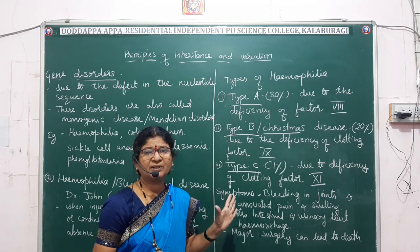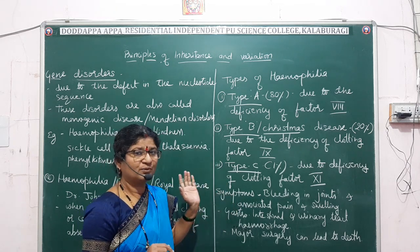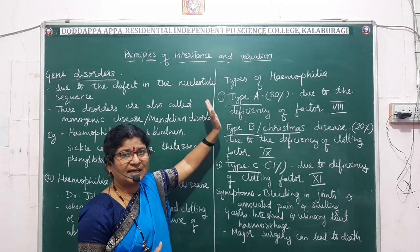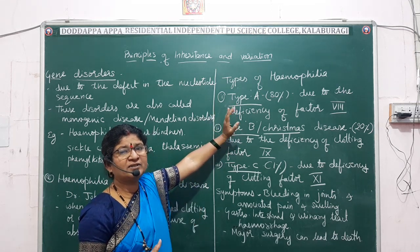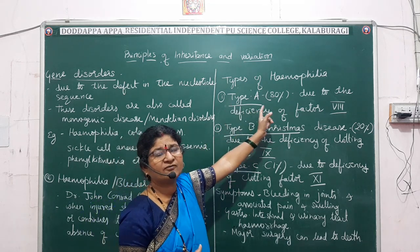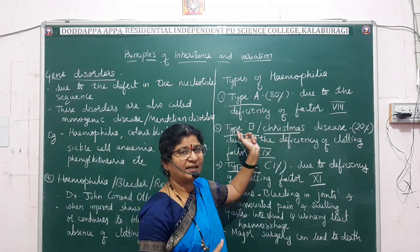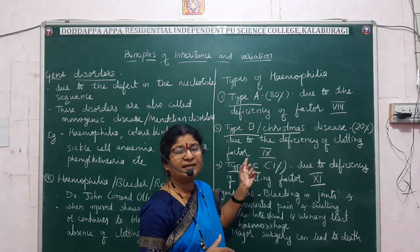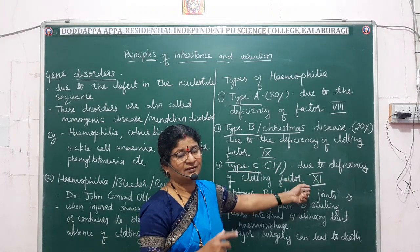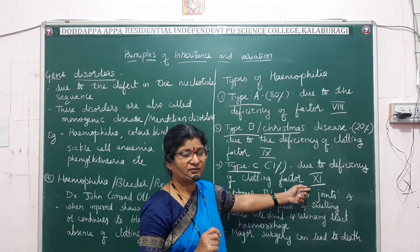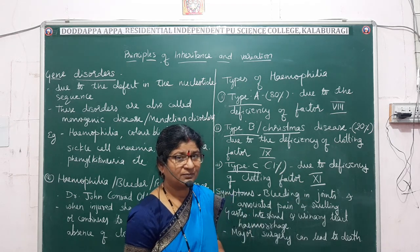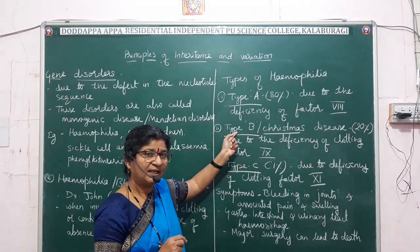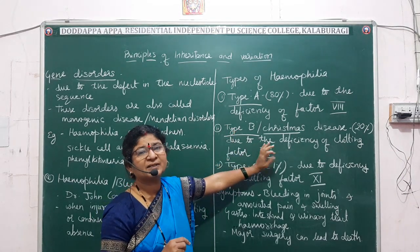To summarize the three types of hemophilia: Type A is caused by deficiency of clotting factor 8, Type B by clotting factor 9, and Type C by clotting factor 11. Type A is the most common, and Type B is also known as Christmas disease.